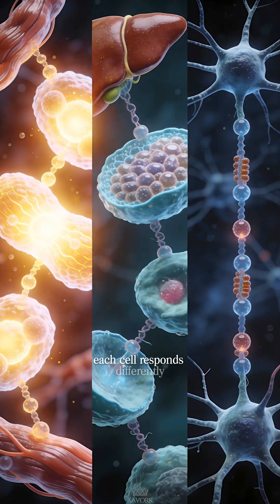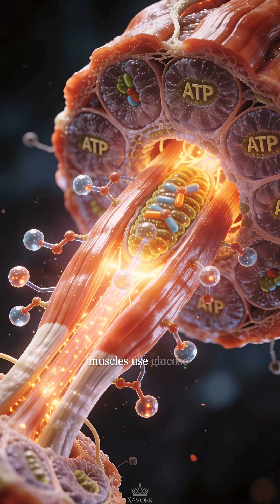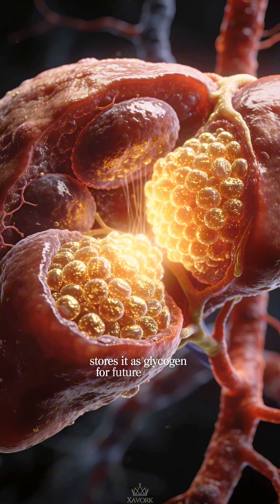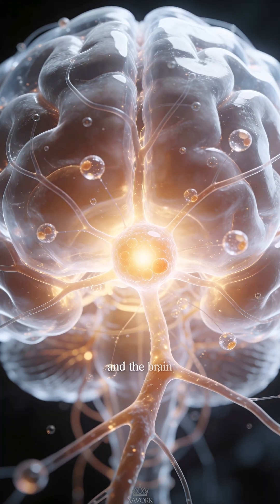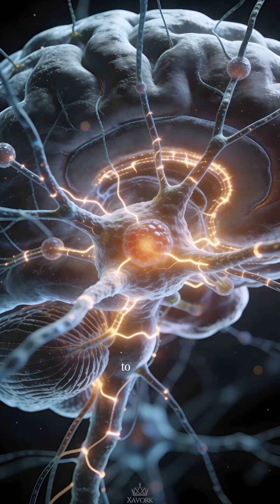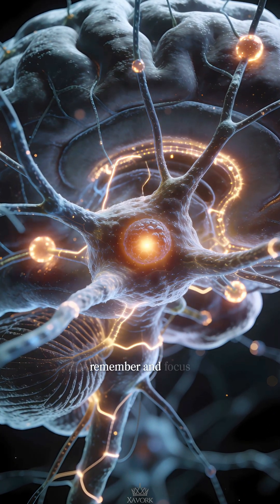Each cell responds differently. Muscles use glucose for movement. The liver stores it as glycogen for future demand. And the brain, which cannot store energy, depends on a constant glucose supply to think, remember and focus.